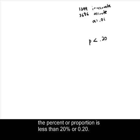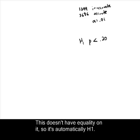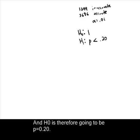And the claim we were asked to test is that the percentage or proportion was less than 20%. Now, this does not have equality on it, so this has automatically got to be H1, our alternative hypothesis, and H0 is therefore going to be the claim that P is equal to .20, because H0 is always going to have equality in it.